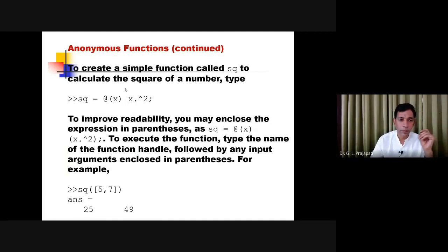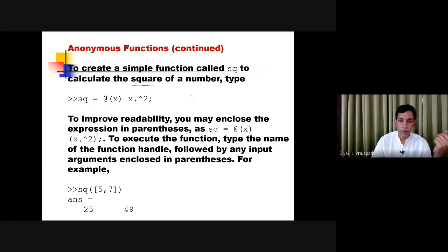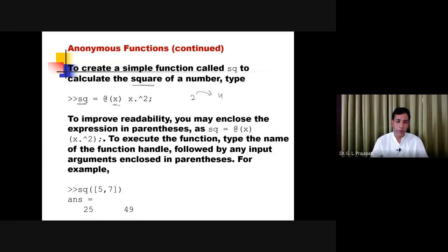For example, we want to create an anonymous function that computes the square of an input value — so if you give two, the output is four. The handle name is 'sq' for simplicity. So: sq = @(x) x.^2. Since there is only one variable, you have one argument x, and this is the expression. You can also enclose it in parentheses. Notice we use the dot operator (.^) because x can be a single number or a matrix.